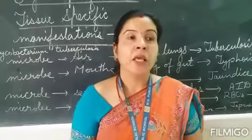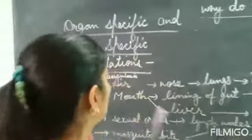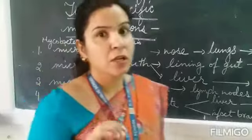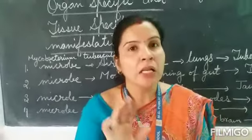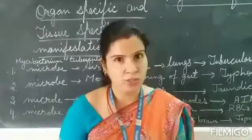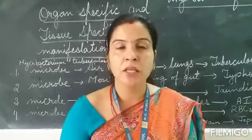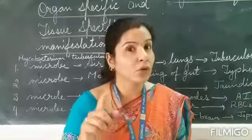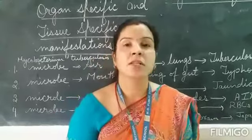Today we will learn about the ways microbes enter our body. The next topic is organ specific and tissue specific manifestations. Many microbes, pathogens, or disease-causing microorganisms enter our body from different parts and target different organs, causing different diseases. You can see how big our human body is, yet these tiny microorganisms enter it, target various tissues and organs, show signs and symptoms, and cause many diseases.